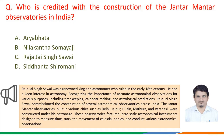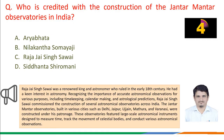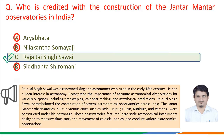Here we may recall that Raja Jaisingh Sawai was a renowned king and astronomer who ruled in the early 18th century. He had a keen interest in astronomy. Recognizing the importance of accurate astronomical observations for time keeping, calendar making, and astronomical predictions, he commissioned the construction of several astronomical observatories across India. The Jantar Mantar observatories, built in various cities such as Delhi, Jaipur, Ujjain, Mathura, and Varanasi, were constructed under his patronage. These observatories featured large-scale astronomical instruments designed to measure time, track the movement of celestial bodies, and conduct various astronomical observations. Therefore, the correct answer is option c: Raja Jaisingh Sawai.